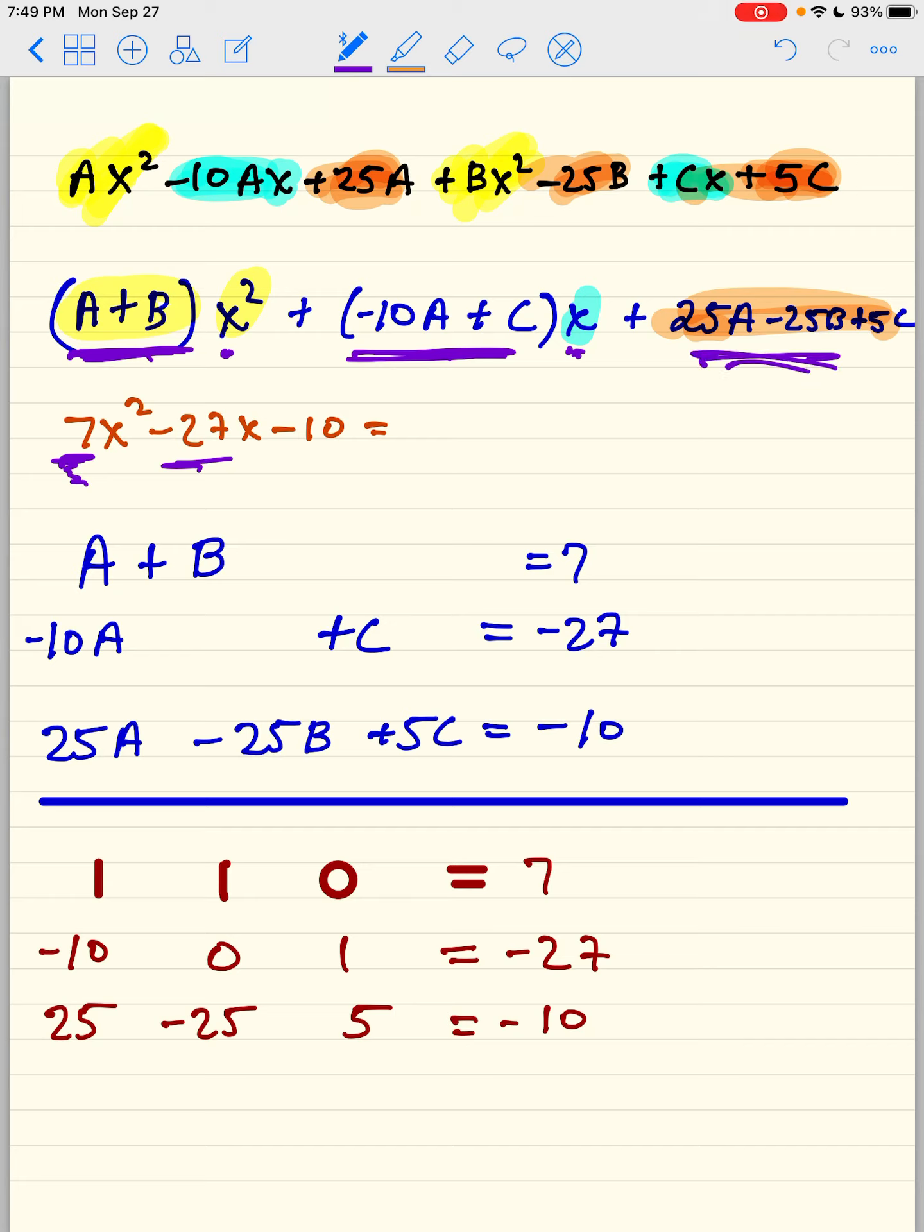So what I did here was I ended up having A plus B equals 7. Negative 10A plus C equals negative 27. And then 25A minus 25B plus 5C equals negative 10.